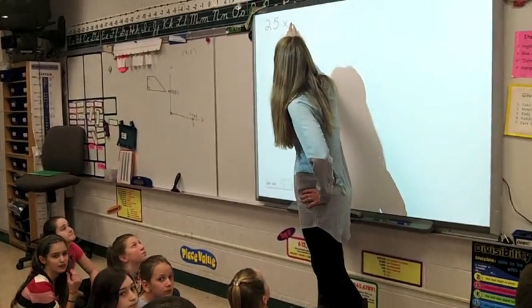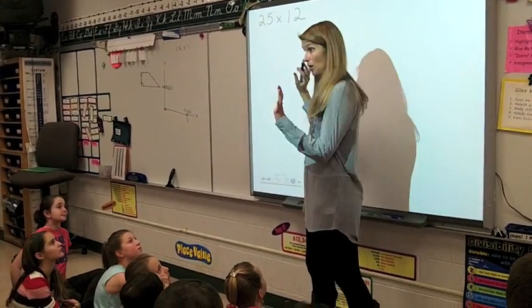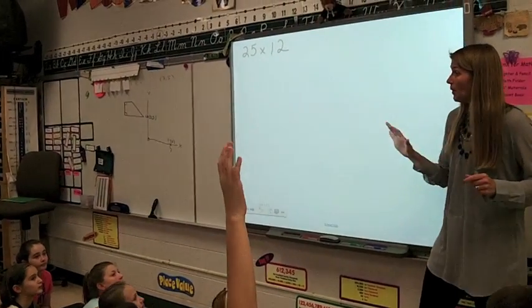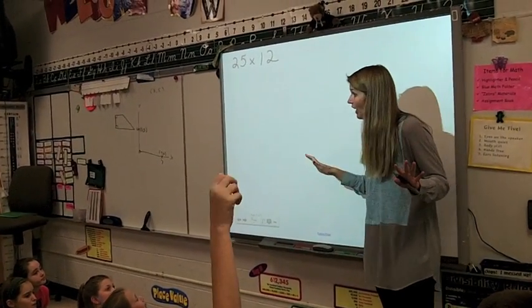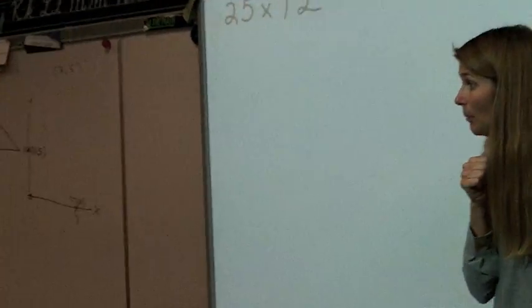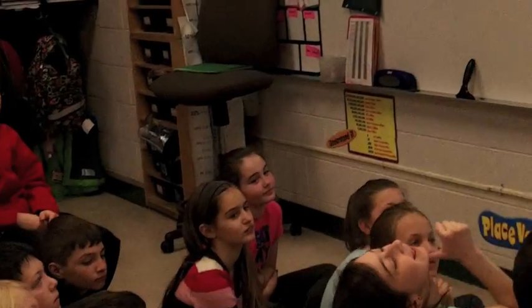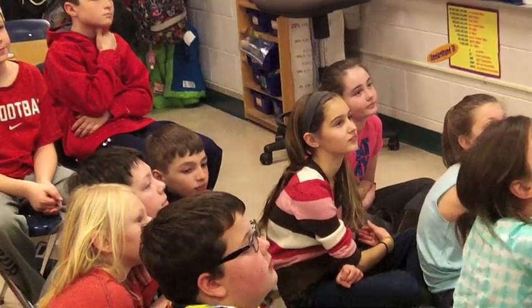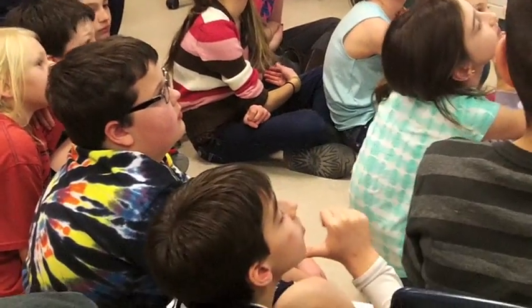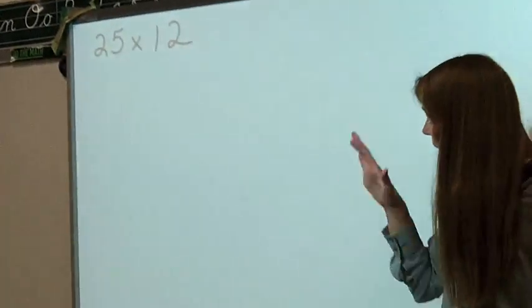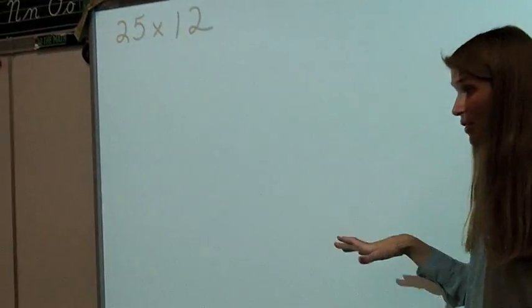Okay, it's 25 times 12. Now remember, when you have an answer in your head, put a thumb underneath your chin. That means you have one way of solving it. If you have a second way, put two fingers up, a third way, a fourth way. Some of you may think of new ways as we're doing it, and that's fine. So I'm going to be quiet and we're all going to think about the answer for a second.